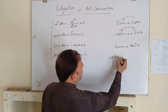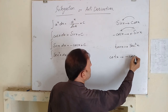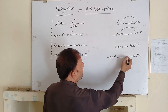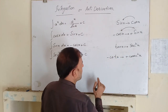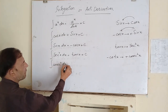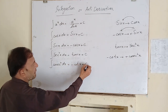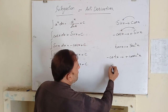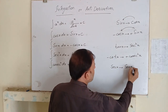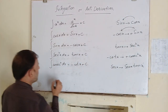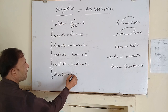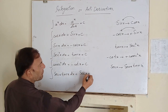We have the derivative of cot x, which is minus cosecant squared x. Multiplying both sides by minus 1, the integration of cosecant squared x is equal to minus cot x plus c. We also have the derivative of secant x, which is secant x times tan x. It means the integration of secant x tan x will be equal to secant x plus c.